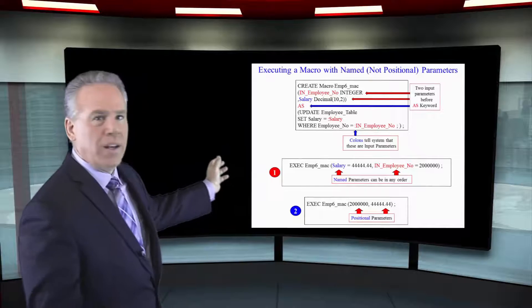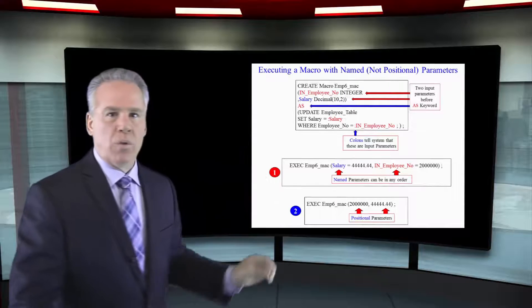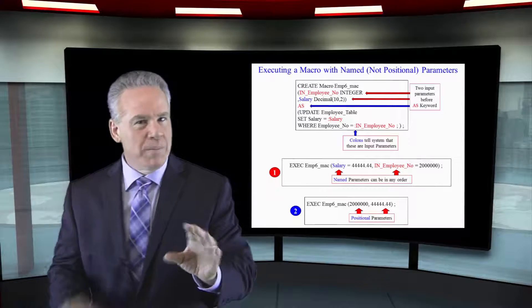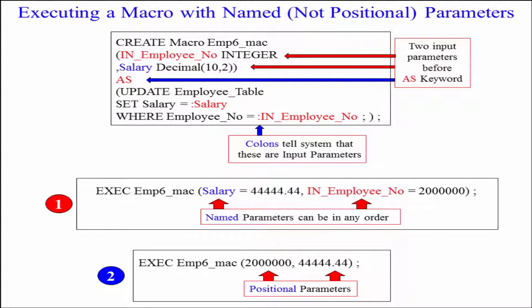We have our open paren time for the macro to run and we run our macro with our input parameters. Remember anytime you see a colon that means I'm referring to the input parameter. Now let's talk about either a named parameter or a positional parameter.